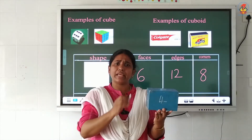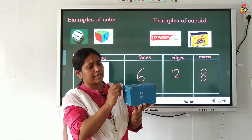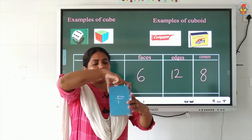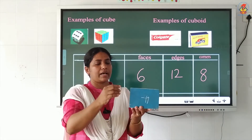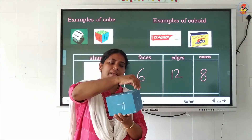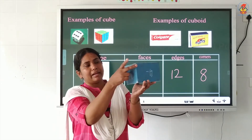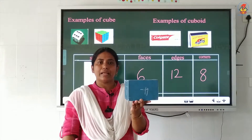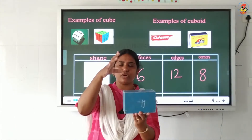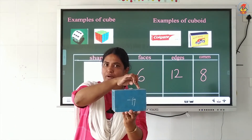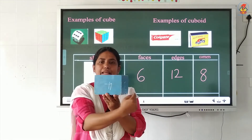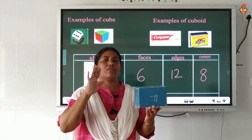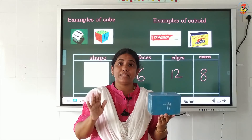What about the edges? I told you that an edge is the meeting point of 2 faces. So for a cuboid, like a cube, how many edges are there? Counting: 1, 2, 3, 4 at the top; 5, 6, 7, 8 at the bottom; then 9, 10, 11, 12 on the sides. So there are 12 edges for a cuboid.